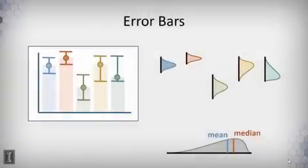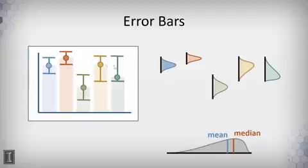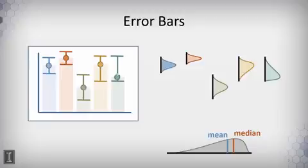In a bar chart, we can use glyphs to represent more than just the actual value of data elements — we can use glyphs to represent their variance. We can put a glyph at the top of each bar indicating the value, but we can also add information such as standard deviation or variance, and where the mean or median value is. These could be 25th and 75th percentile bars, and we can see in some cases that the distribution of data aggregated into a single bar is actually skewed in one direction or another.